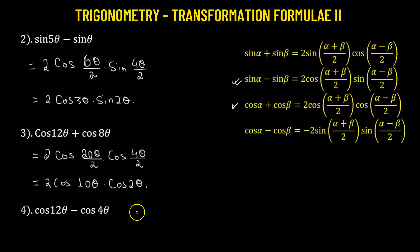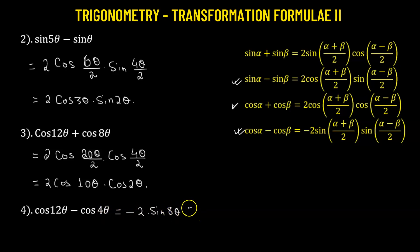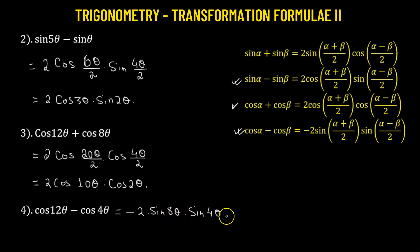Going to the next problem, we have cosine 12θ minus cosine 4θ. This is a difference of two cosine functions. The result is negative 2 times sine of (12θ + 4θ)/2, which is 16θ/2 = 8θ, multiplied by sine of (12θ − 4θ)/2, which is 8θ/2 = 4θ. So the result is negative 2 times sine 8θ times sine 4θ.